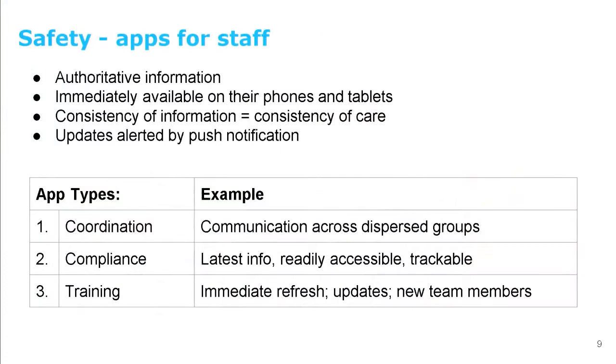When it comes to apps for staff, the safety implications are effectively the same as for patients. Authoritative information — the same. It's immediately accessible: instead of having to log on to the internet, it's there on their device when they're out and about or in the wards. Consistent information — the more consistent you can make the information, the more consistent the care is likely to be. And you can alert them to new things.